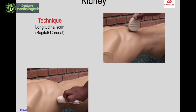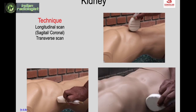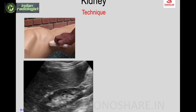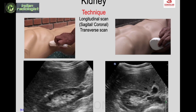The technique involves a longitudinal scan — either sagittal or coronal — and a transverse scan either from the subcostal anterior or from the right flank. The longitudinal sweep, if sagittal, moves side to side; if coronal, anteroposterior. The transverse sweep moves above downwards. The transverse scan of the kidney can be taken from the anterior subcostal or from the right flank.